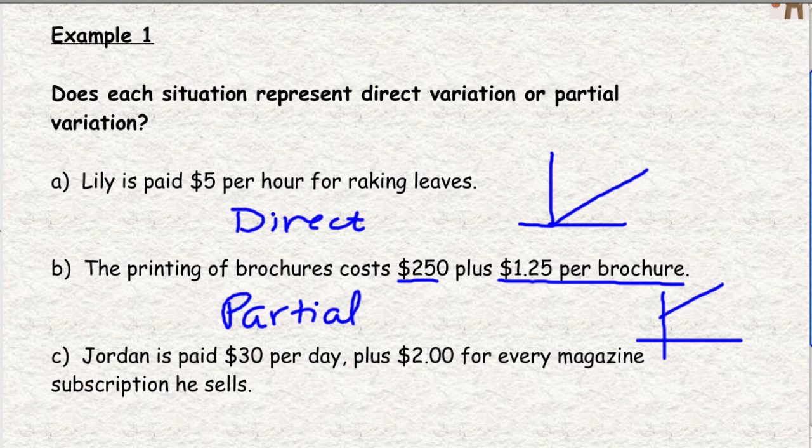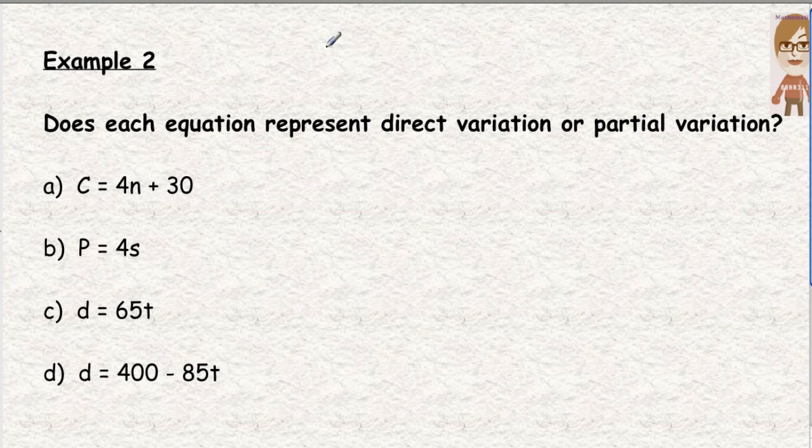Part C, Jordan is paid $30 per day plus $2 for every magazine. He's paid $30 a day. That's an initial value. It's a flat rate. And then $2 for every magazine. That is the rate. So that means this one would also be partial variation. If there is just a rate and no initial value, you know that it's direct and otherwise it's partial.